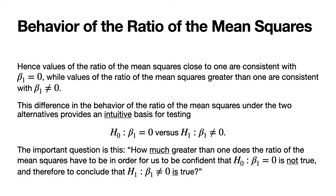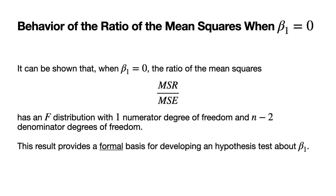The difference in the behavior of the ratio of the mean squares under these two alternatives provides an intuitive basis for testing the null hypothesis that beta1 equals zero against the alternative hypothesis that beta1 is not equal to zero. The key question is: how much greater than one does the ratio of the mean squares have to be for us to be confident that the null hypothesis is false? It can be shown that when beta1 equals zero, the ratio MSR over MSE has an F distribution with one numerator degree of freedom and n minus two denominator degrees of freedom. This result provides a formal basis for developing a hypothesis test about beta1.